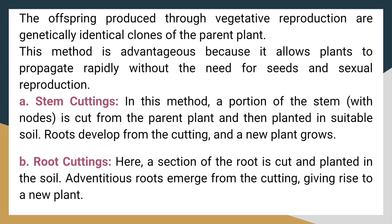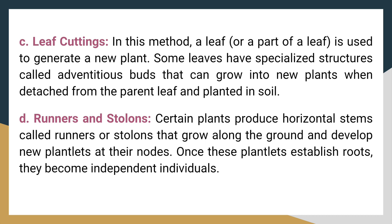Root cuttings. Here, a section of the root is cut and planted in the soil. Adventitious roots emerge from the cutting, giving rise to a new plant. Leaf cuttings. In this method, a leaf or a part of a leaf is used to generate a new plant. Some leaves have specialized structures called adventitious buds that can grow into new plants when detached from the parent leaf and planted in soil.